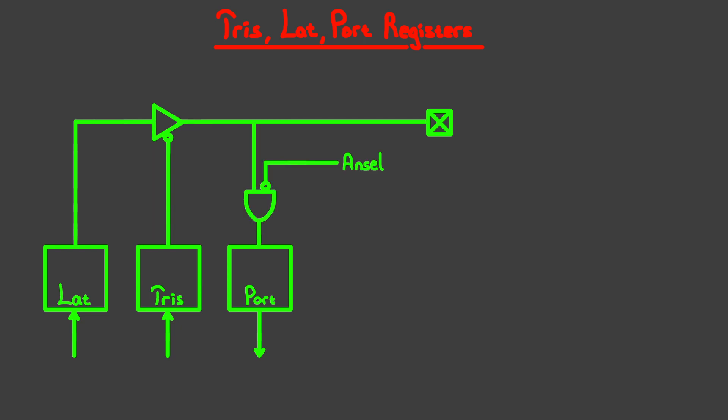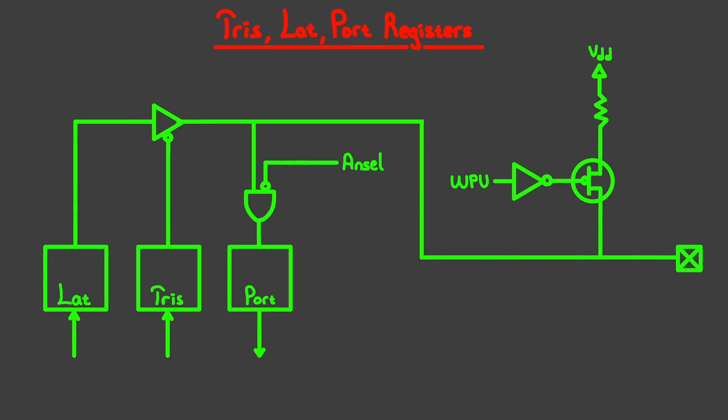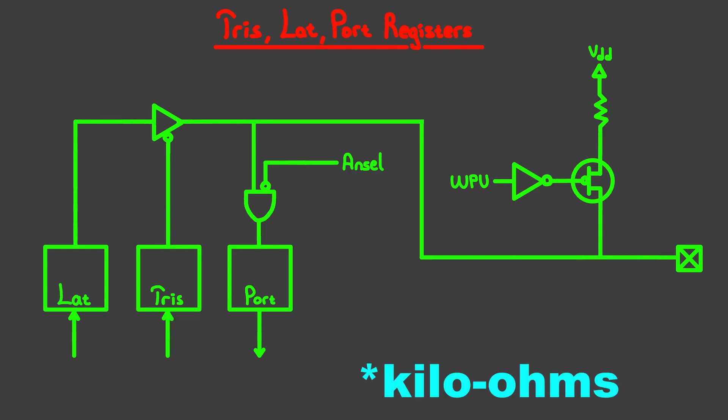There is also the WPU bit. Not every pin has an internal pullup — only the RB pins have this functionality, along with the RE3 pin. For the pins that have this capability, if the WPU bit is set the output will have a resistor connecting it to the VDD rail. It's called a weak pullup, so the resistor value is quite high — the datasheet doesn't specify the value, but it should be higher than a couple tens of ohms at the very least.